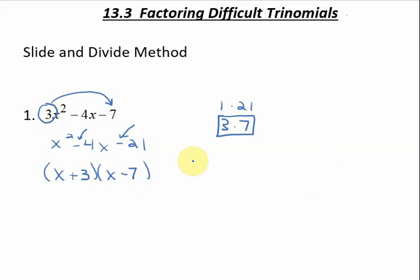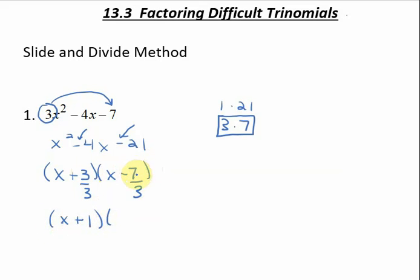We're not done yet because since we slid that leading coefficient to the back, now we have to divide to get back to our actual solution. We divide both of our constants by that leading coefficient — in this case, both by 3. When I divide 3 by 3, that simplifies to 1. But since 7 over 3 doesn't reduce to a whole number, we take the denominator and slide it back in front of our x. So this gives me 3x minus 7.